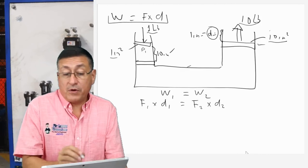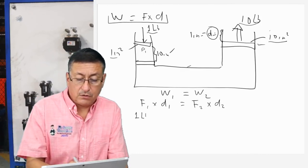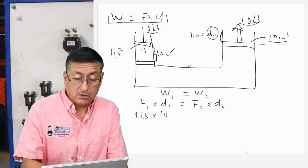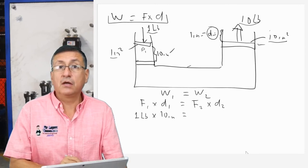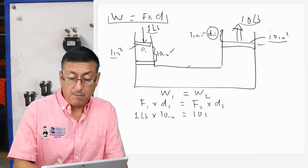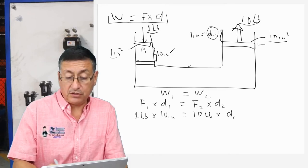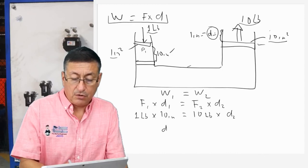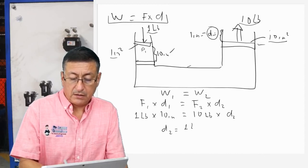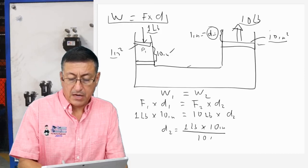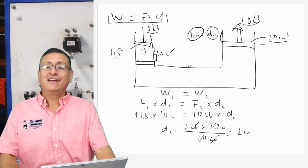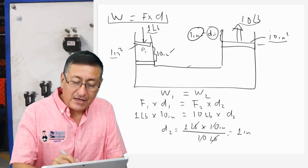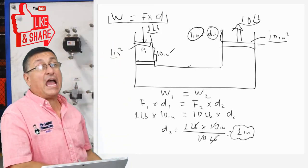How much is force number one? One pound. How much is distance number one? Ten inches. And force number two is ten pounds. Distance number two equals one pound times ten inches divided by ten pounds. Pounds cancel with pounds and ten cancels with ten. The distance number two is one inch. The second piston only moves one inch, while the first piston moved down ten inches.